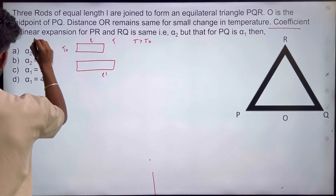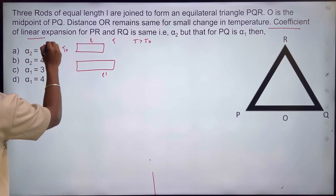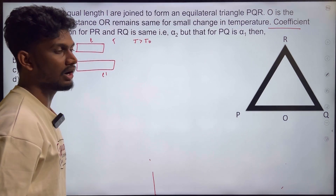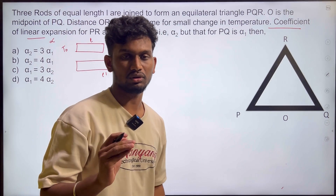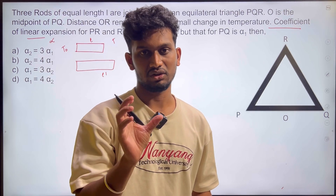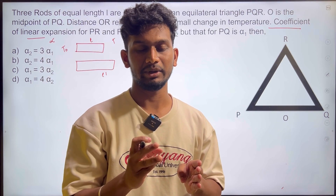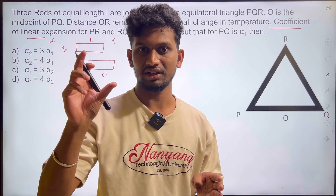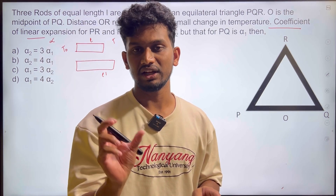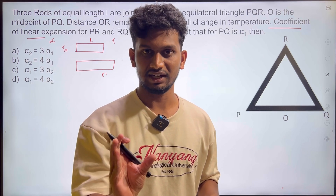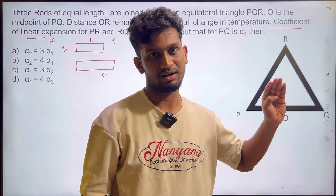The amount of increase is not mandatory — it is determined by the coefficient of linear expansion, that is alpha. One rod of length L: if you change the temperature, the change in length is proportional, and that proportionality constant is alpha.